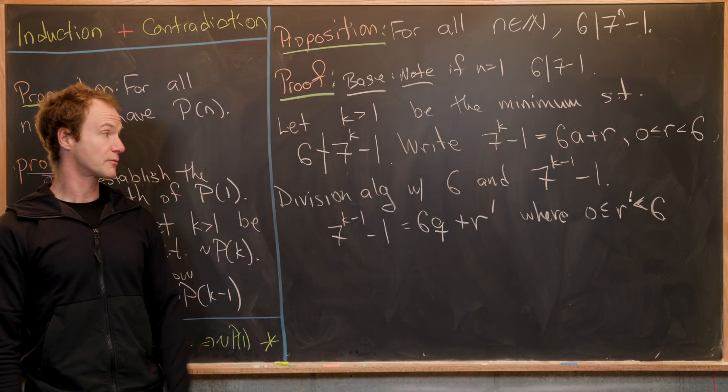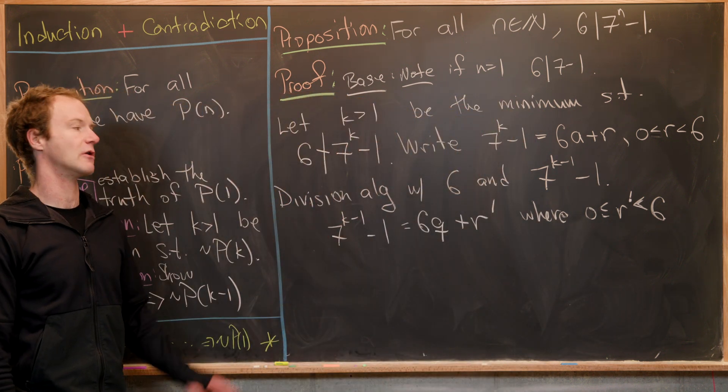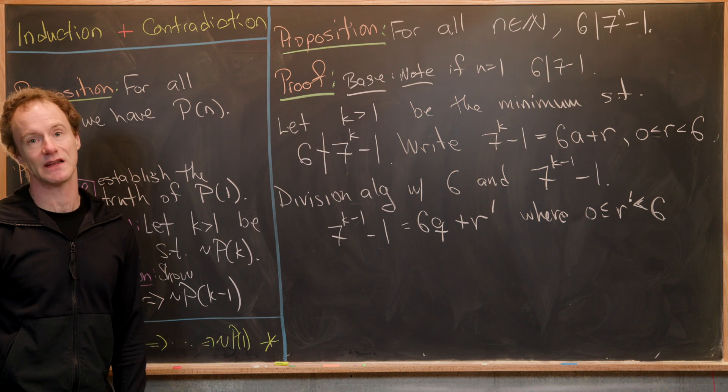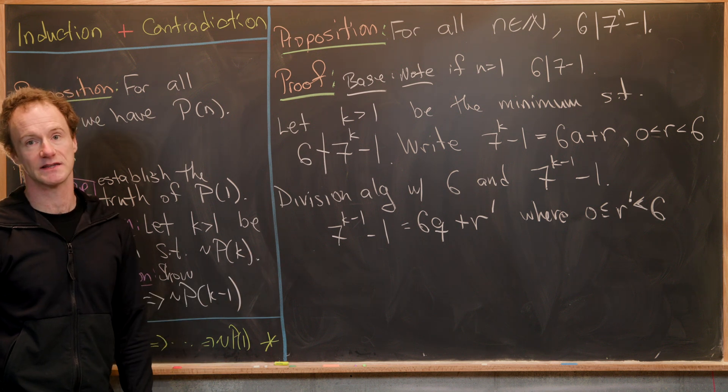Here, r prime could be equal to zero. Of course, we want to show that it is not equal to zero, but a priori, we don't know that is the case.